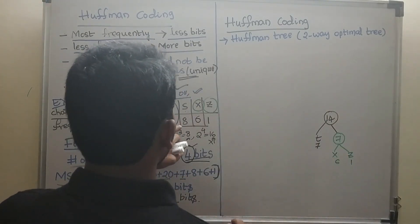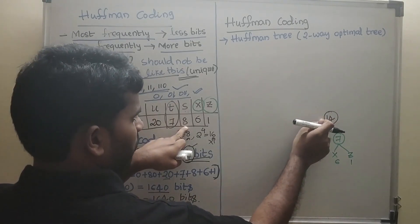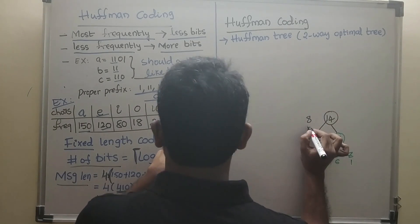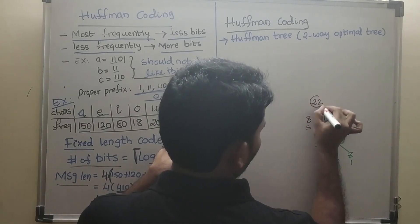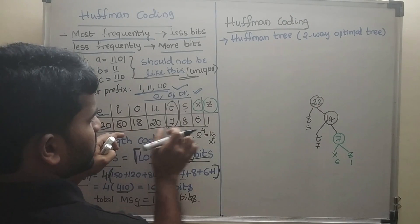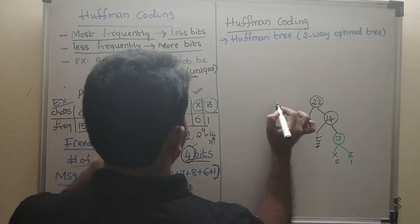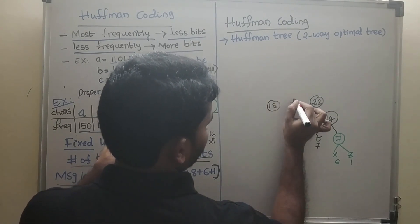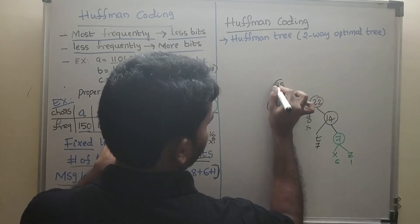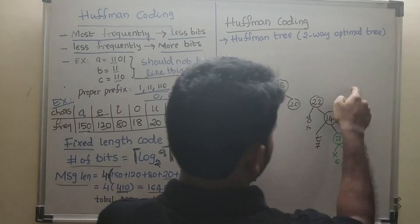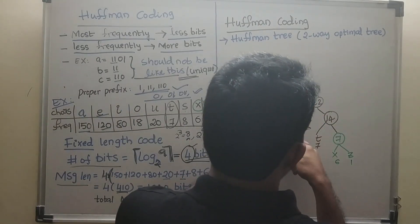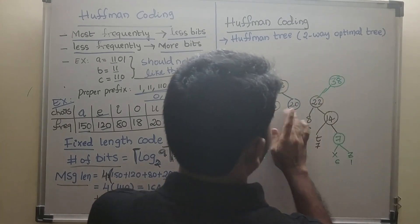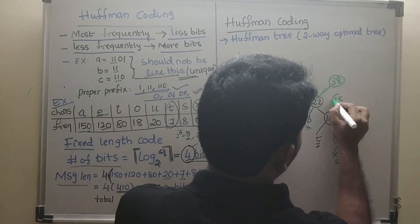Next, below 14 only S (8) is available, so we combine 14 + 8 = 22. Then O (18) and U (20) — those are the next characters — combine to give 38. The 38 node is represented by 18 (O) and 20 (U).